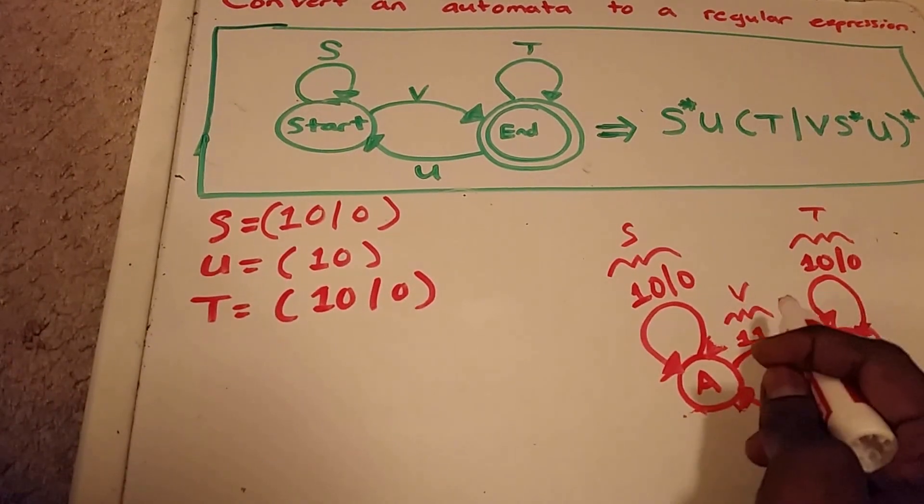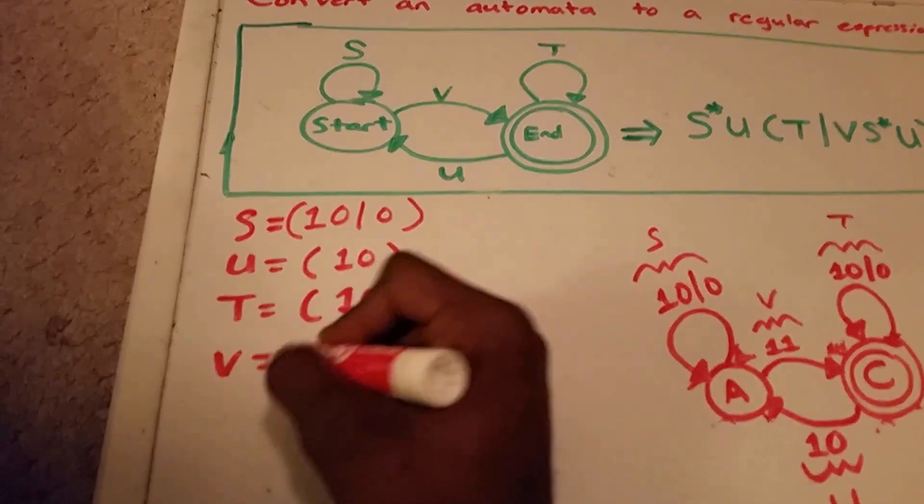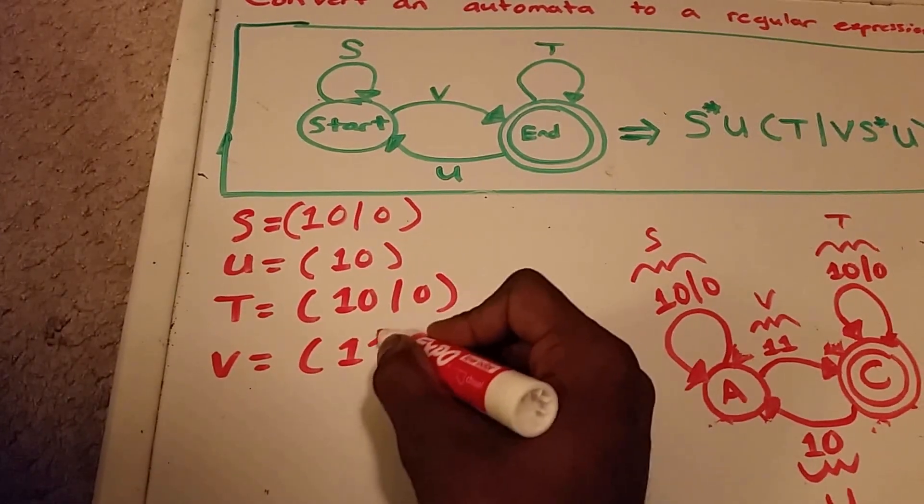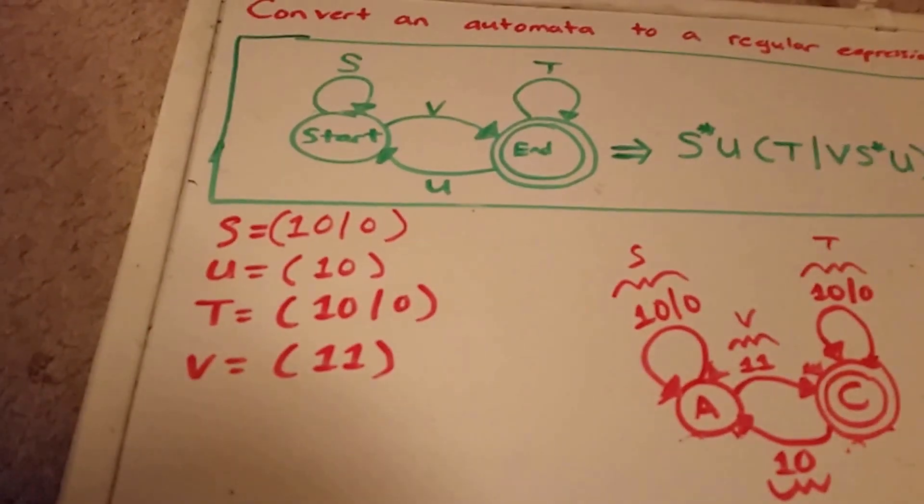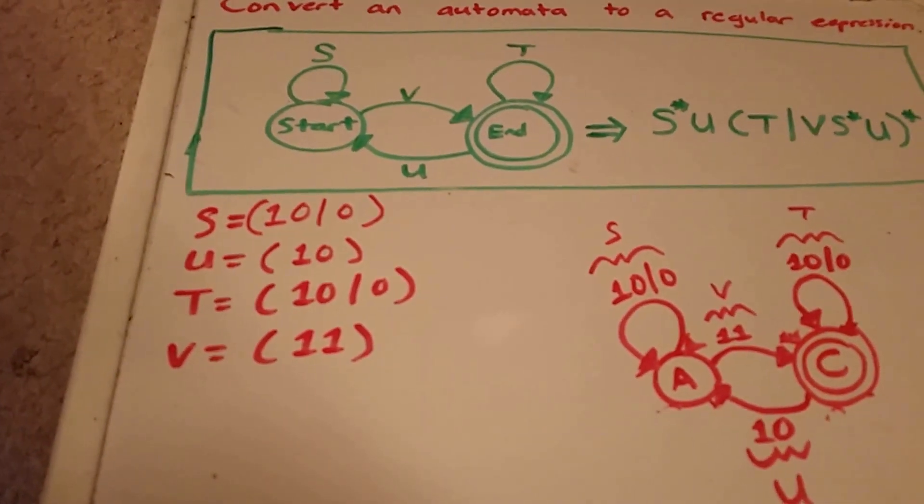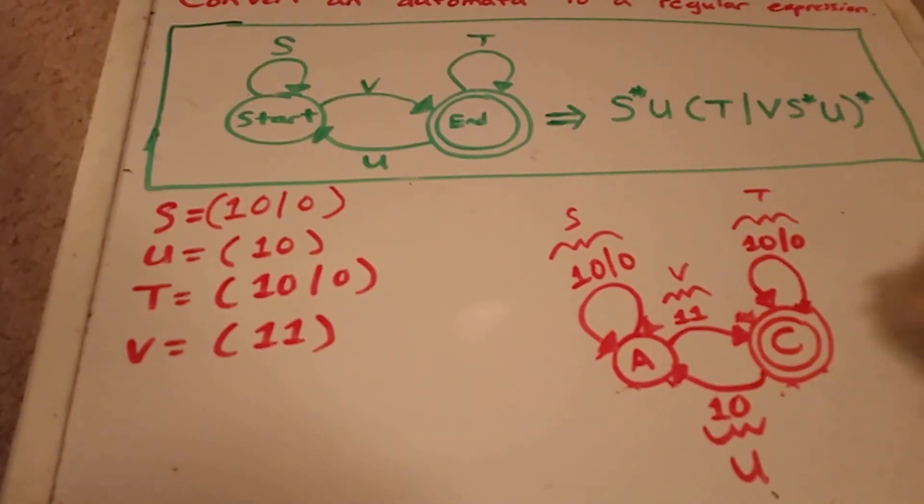And we're missing a V, so our V is one, one. All right, make sure I got that correct there, and everything looks good.